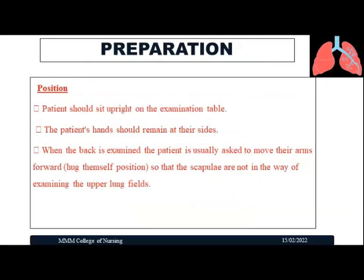Before doing a physical examination of the respiratory system, certain preparations are needed. First, positioning of the patient: the patient should sit upright on the examination table with hands at their sides. When examining the posterior chest, the patient should lean forward and hug a pillow so that the scapula are not in the way, widening the posterior chest to allow easier identification of abnormalities.